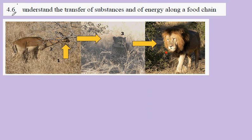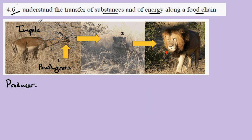IGCSE biology syllabus statement 4.6, looking at the transfer of substances and energy along food chains. Here we have a food chain: we've got bush grass here being eaten by the impala. The bush grass is the producer, our impala is the primary consumer, here we have a leopard that would be the secondary consumer, and if a leopard were to be eaten by a lion, that would make it the tertiary consumer.